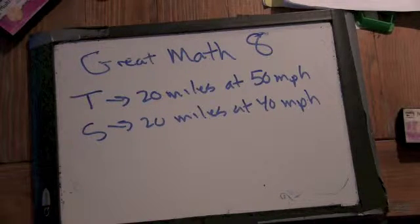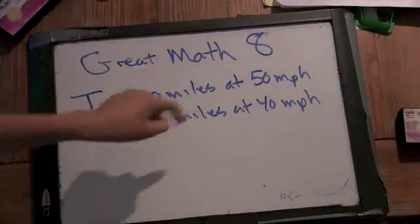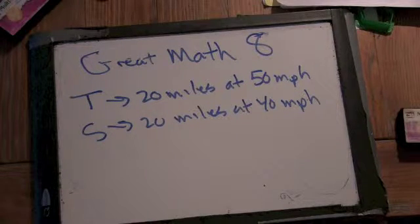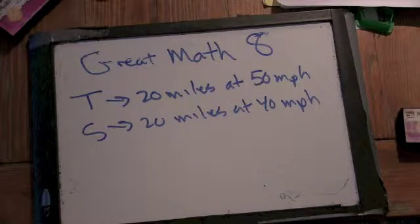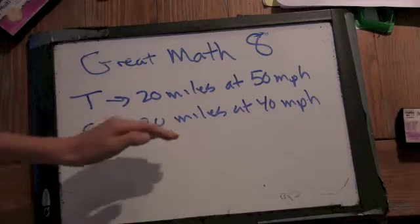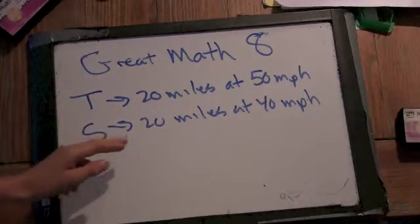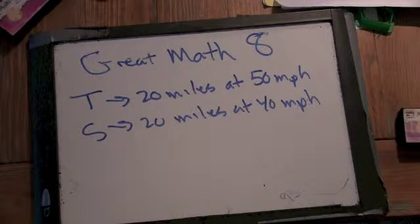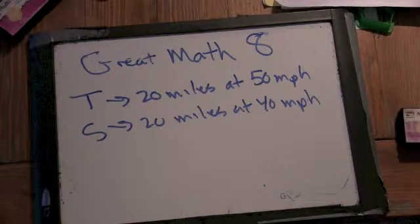So first we need to find how much time it takes both these people to complete their journeys. If Sherry drives 20 miles at 40 miles an hour, then wouldn't it take her half an hour to do it? Because her driving rate is twice the rate she has to go. In one hour she's going to go 40 miles, so in 30 minutes she can go 20. So maybe worth writing that down — Sherry takes 30 minutes for this trip.